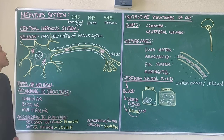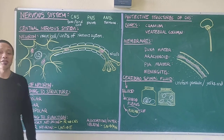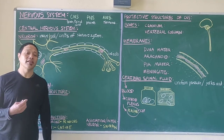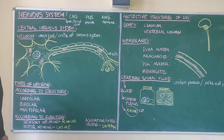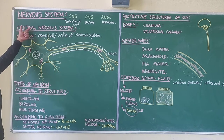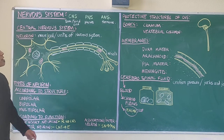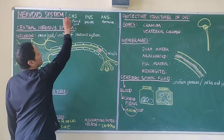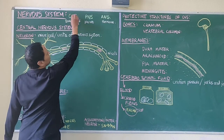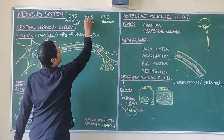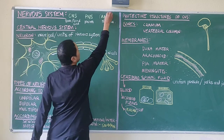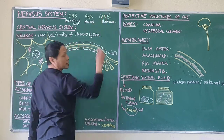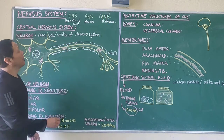This is the nervous system — just an introduction. The nervous system of humans comprises of the central nervous system, the peripheral nervous system, and the autonomic nervous system. There are three parts to it.